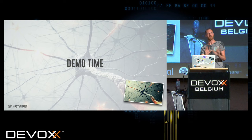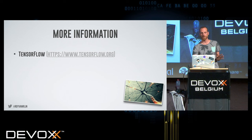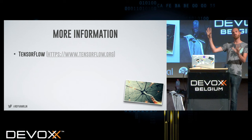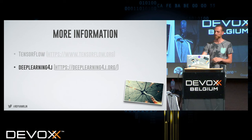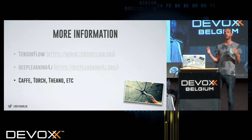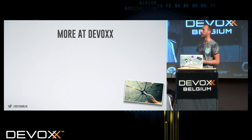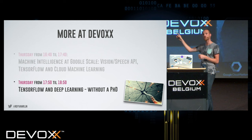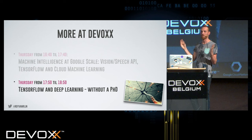Very simply, that's a neural network. If you want to learn more about TensorFlow, go to the TensorFlow website — it's mostly Python. Most neural network and machine learning libraries and frameworks are Python. But there's DeepLearning4J which is Java. And there are others: Caffe, Torch, Theano. If you want to learn more about TensorFlow, there are a couple of talks tomorrow: Google Scale talking about TensorFlow, and TensorFlow and Deep Learning Without a PhD, which I'm going to attend because I don't have a PhD.